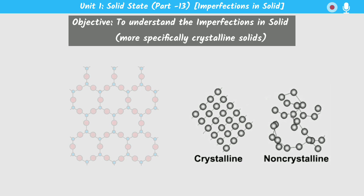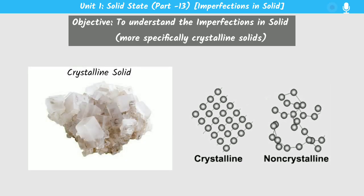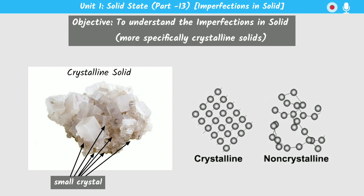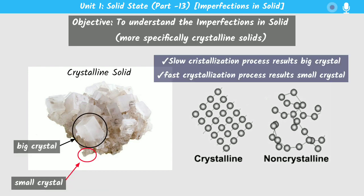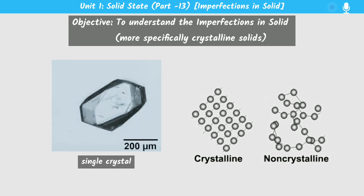Generally a solid is formed by the aggregation of a very large amount of small crystals. That means many small crystals will aggregate with each other to form a solid. These small crystals which form the solid have some defects. The size of a crystal actually depends upon the crystallization time or the crystallization process.